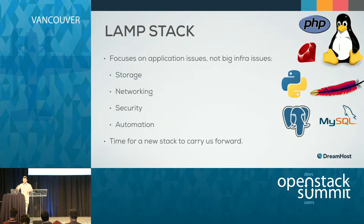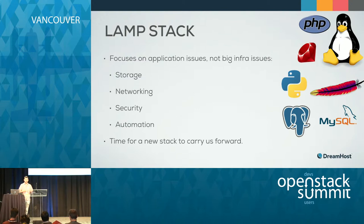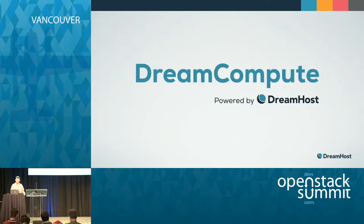Automation — scaling up and out, making it easier for us to just provision more infrastructure and make it available to customers. So we need a new stack, something for the next 15 years — a complement to LAMP, not a replacement.